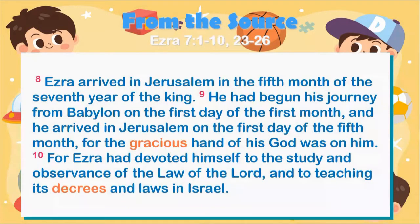Ezra arrived in Jerusalem in the fifth month of the seventh year of the king. He had begun his journey from Babylon on the first day of the first month and arrived in Jerusalem on the first day of the fifth month, for the gracious hand of his God was on him. For Ezra had devoted himself to the study and observance of the law of the Lord, and to teaching its decrees and laws in Israel.